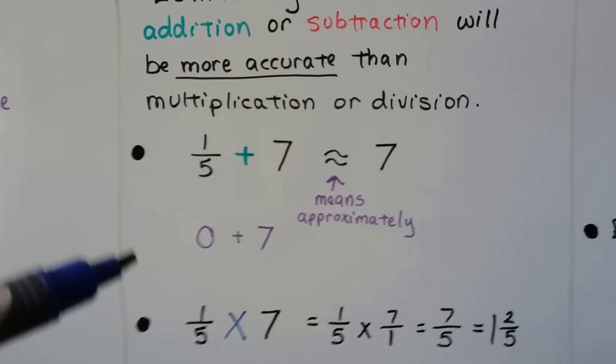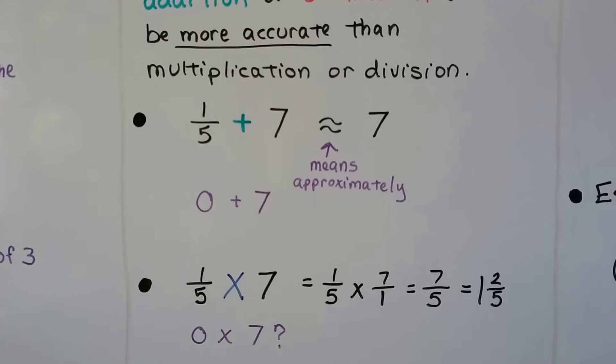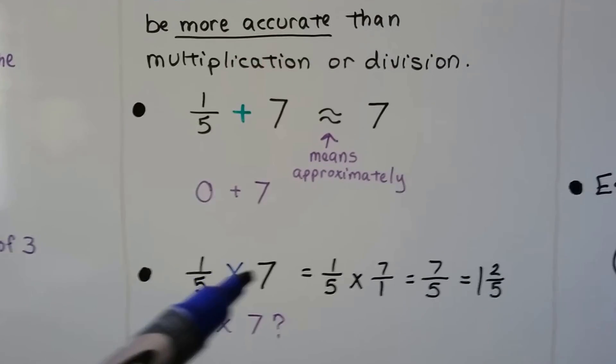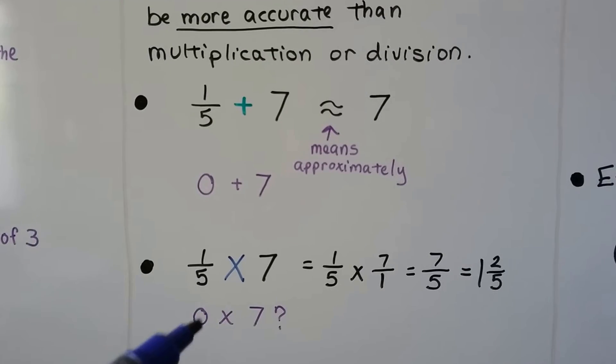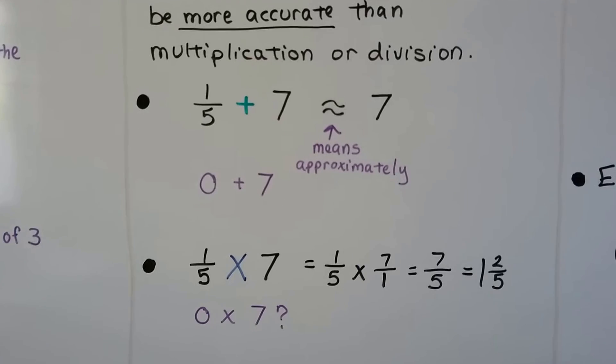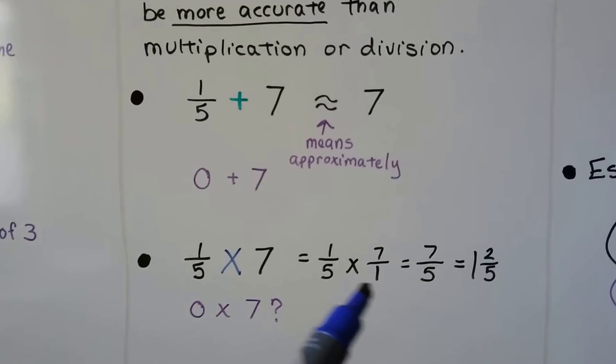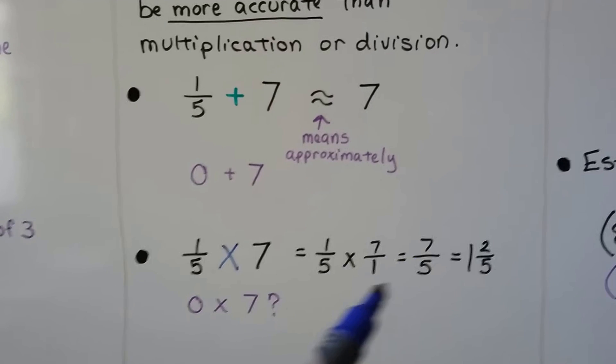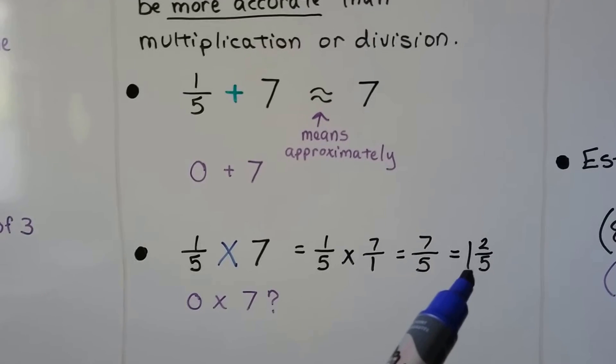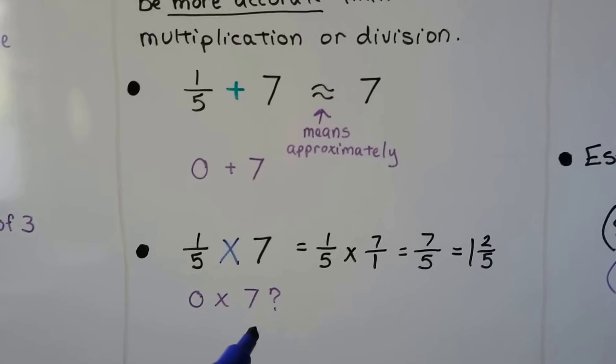Now look what happens. Look at how accurate it is when we try multiplication. If we do 1 fifth times 7, if we round 1 fifth to 0, we've got 0 times 7, which is 0. But if we do it for real, we do 1 fifth times 7 over 1. The 7 times 1 is 7, and 5 times 1 is 5, so it comes out to 1 and 2 fifths, not zero.